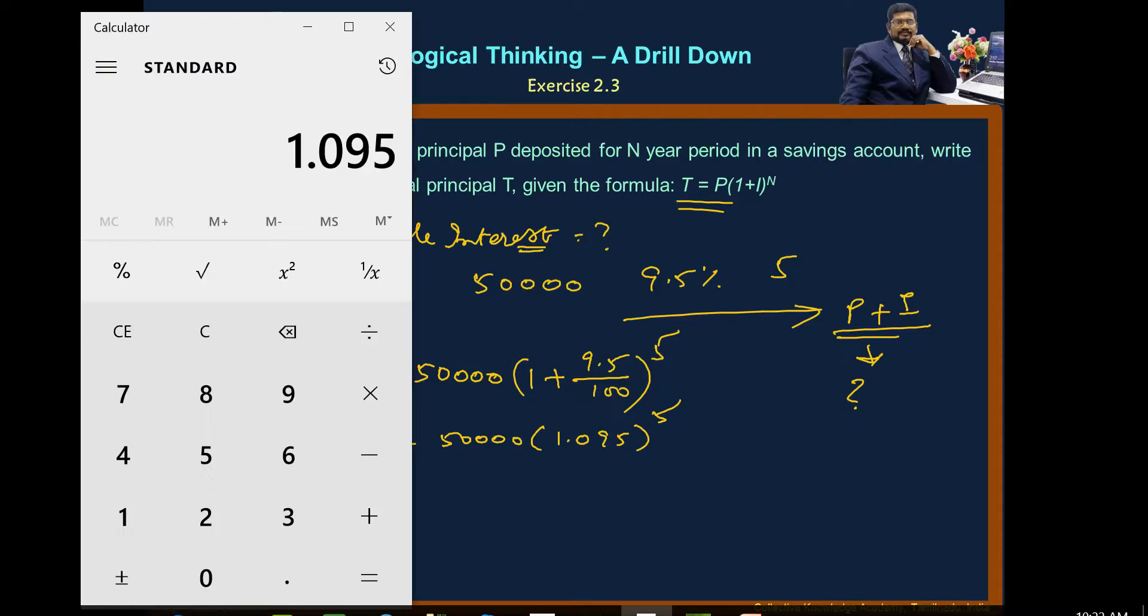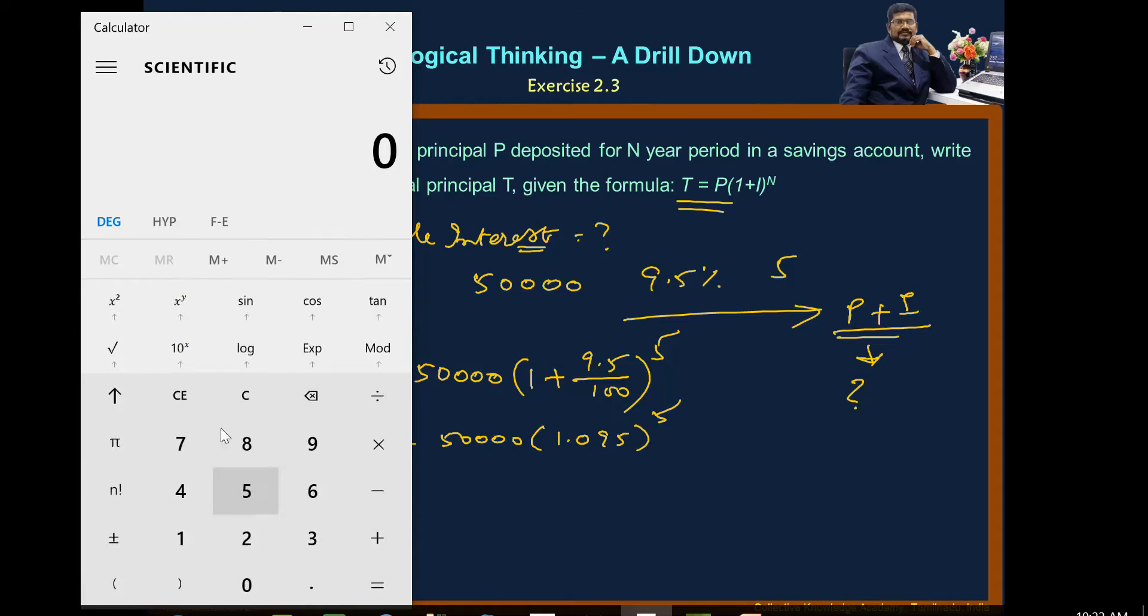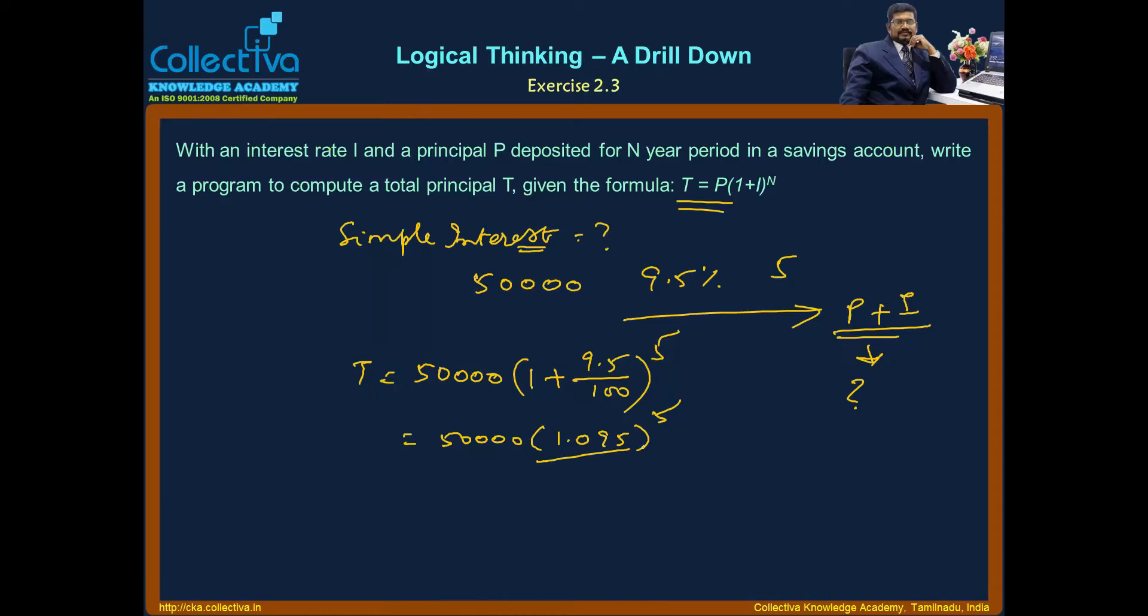So 1.095 to the power of 5 equals 1.5742. Then multiply 1.5742 times 50,000 to get the result.